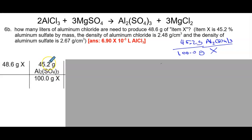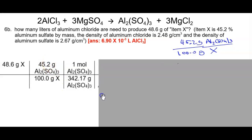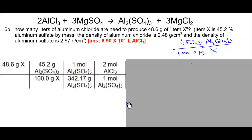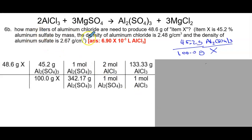Now we have grams of aluminum sulfate, so we use the periodic table number — grams on the bottom so it cancels per every one mole. With moles on top, we do the mole-mole shuffle: 1 mole of aluminum sulfate for every 2 moles of aluminum chloride. Once we get moles of aluminum chloride, we use the periodic table number to get grams of aluminum chloride. To get to liters, we must get to mass first, and our pathway between mass and volume is density. So we use the periodic table to go from moles to grams, then use the density of aluminum chloride.